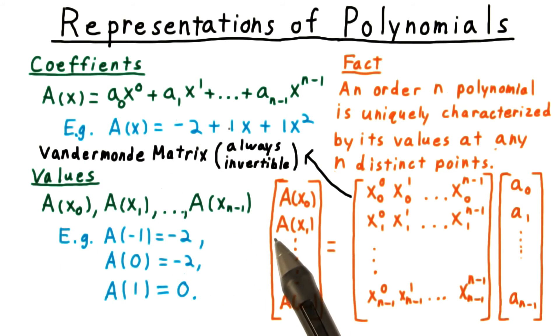Its determinant is the product of the differences of all the values of x. So, as long as these are distinct, the determinant will be non-zero, and that means the matrix is invertible. So, given the values then, we should be able to recover the coefficients.